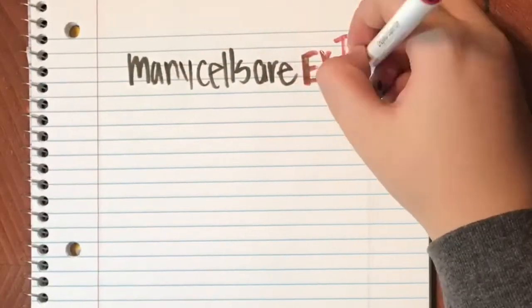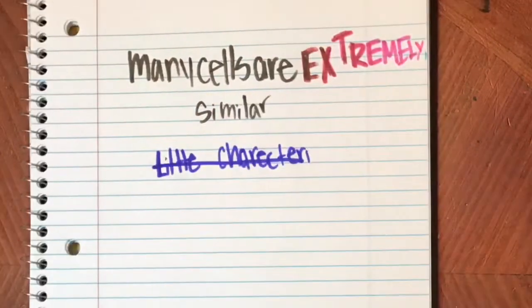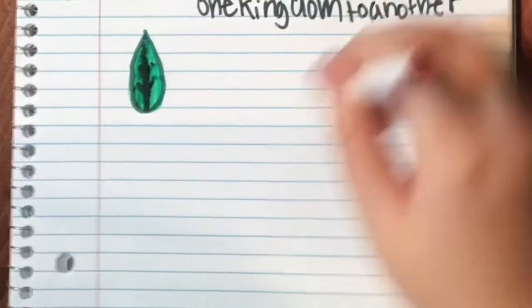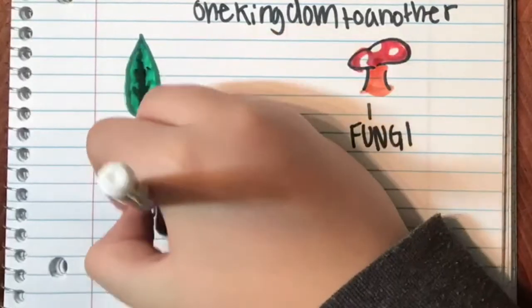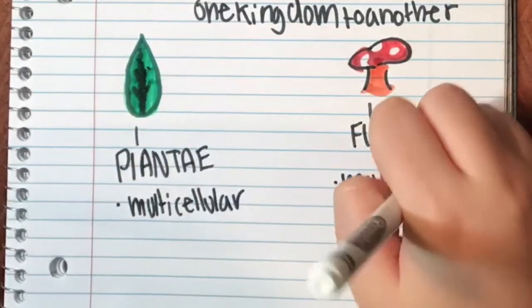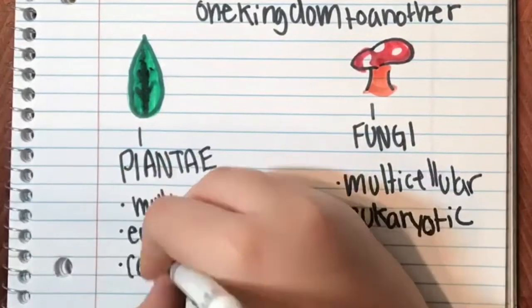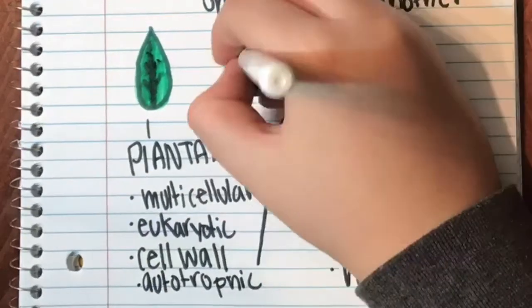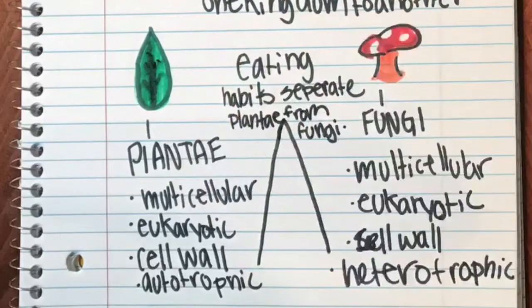Many cells are extremely similar. Little differences set the cells apart from one kingdom to another. For example, Plantae and Fungi are both multicellular, eukaryotic, and have a cell wall, but their eating habits are different. Plantae is autotrophic and Fungi is heterotrophic. Eating habits can separate them from one kingdom to another.